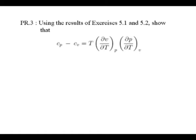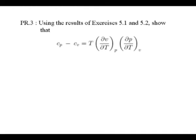The problem I am going to take up is PR3. It says: using the results of exercises 5.1 and 5.2, show that CP minus CV equals something. Remember that these are the property relations for any simple compressible system or fluid. We know that for an ideal gas CP minus CV is the constant R. For a general fluid it will not be so, and this is the expression we need to derive.